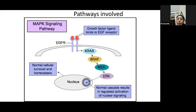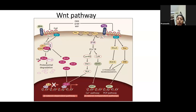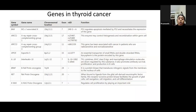MAPK stands for mitogen-activated protein kinase. The receptor in this pathway is the epidermal growth factor receptor (EGFR). When a growth factor attaches, it activates a stepwise progression of proteins that signal the cell to multiply. The small proteins involved are: K-RAS, then BRAF, then MEK, and then ERK. In a normal cell, this operates in a regulated manner. The next pathway, PI3K, involves AKT and mTOR — mammalian target of rapamycin.